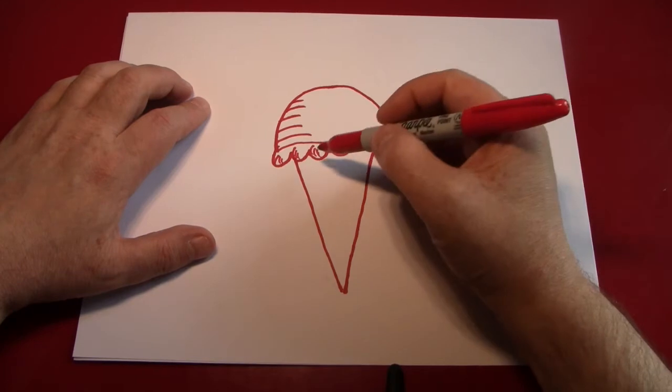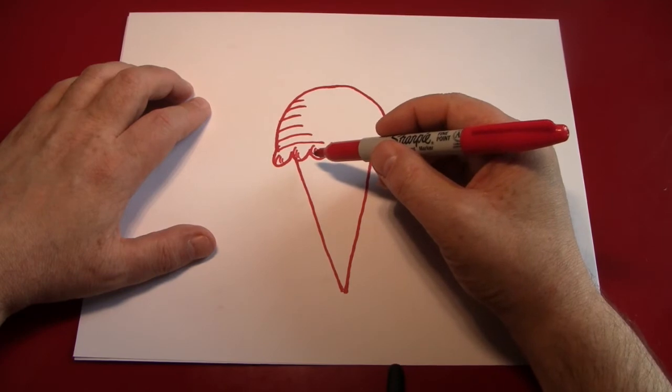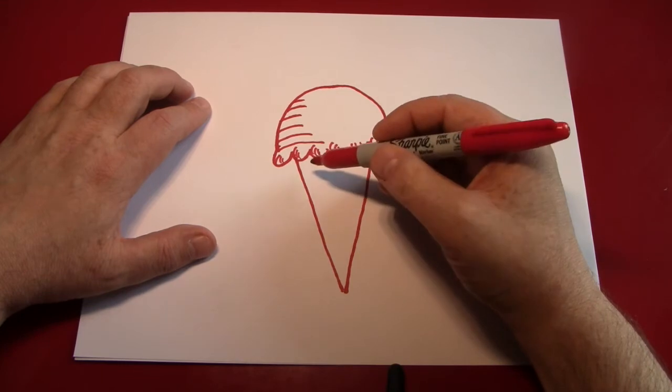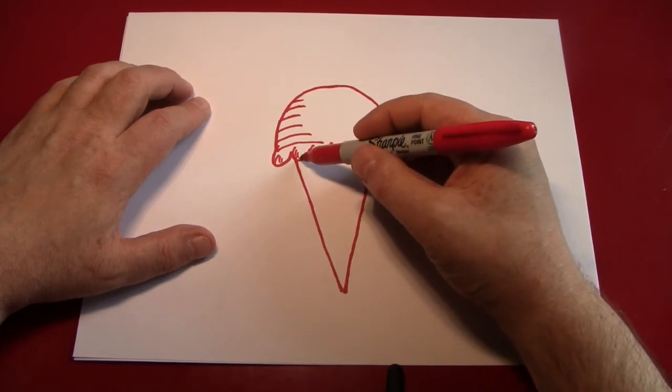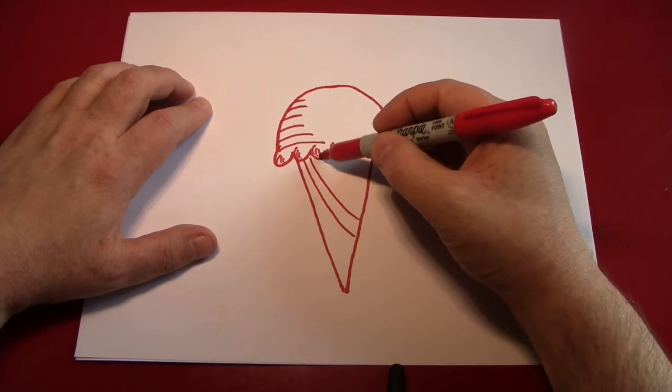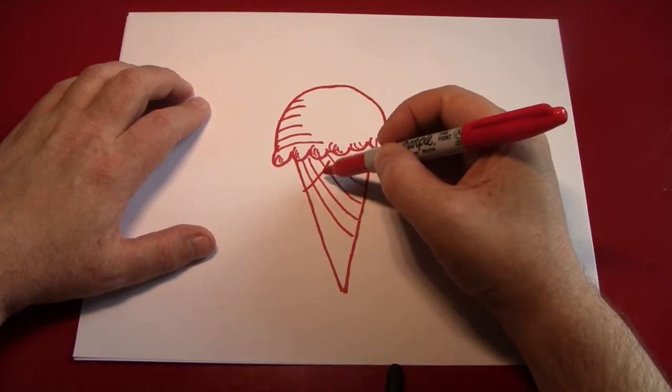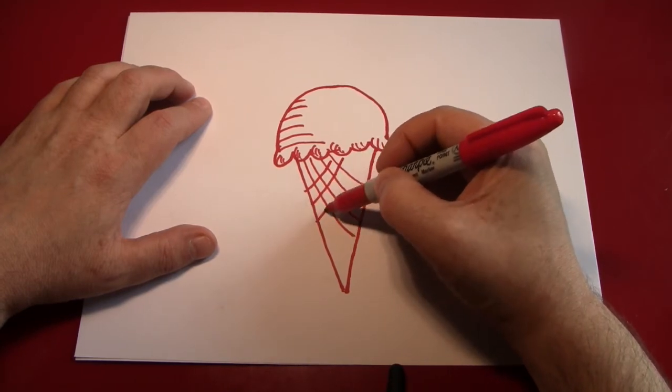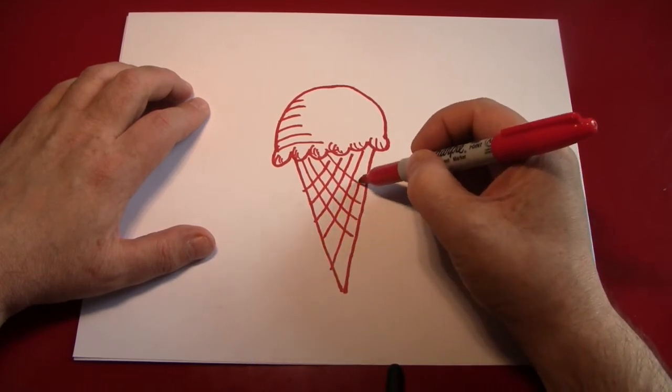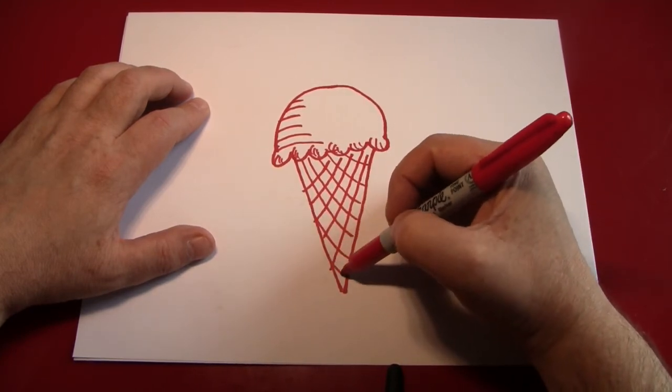Next we're going to put the texture on the ice cream cone. This is one of those sugar cones. The way the pattern is on this is little triangles, and they can be created by making lines. Some that go this way, and some that go this way, and some that go this way.